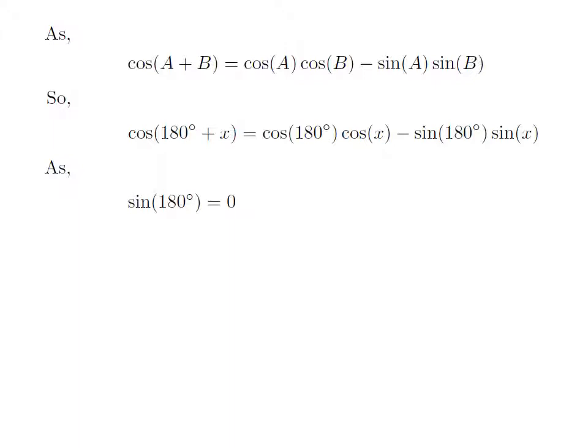We know the value of sine of 180 degrees is equal to 0. How to find the value of sine of 180 degrees has been explained in the video appearing in the upper right corner. We also know the value of cosine of 180 degrees is equal to minus 1. How to find that value has also been explained in the video appearing in the upper right corner, and the URL addresses are mentioned in the description section.